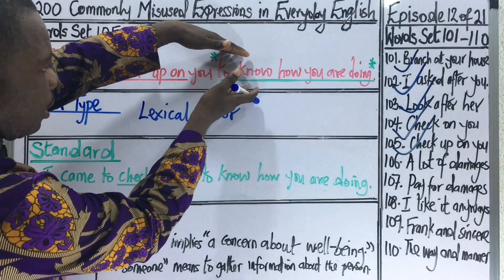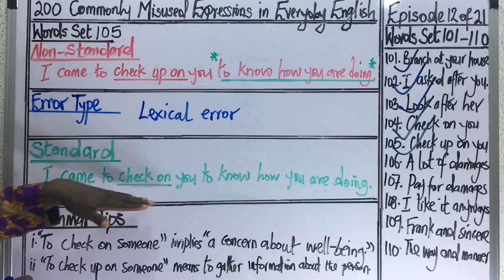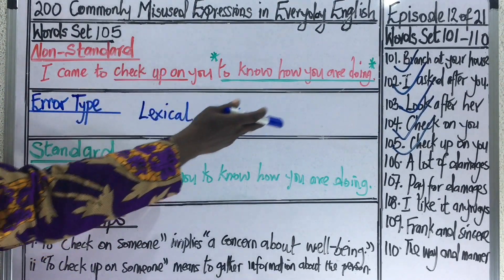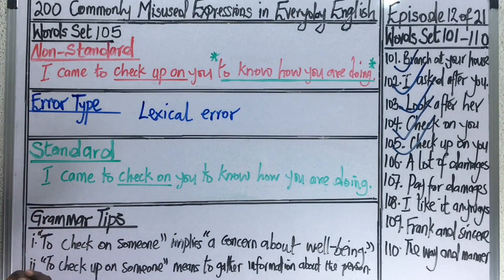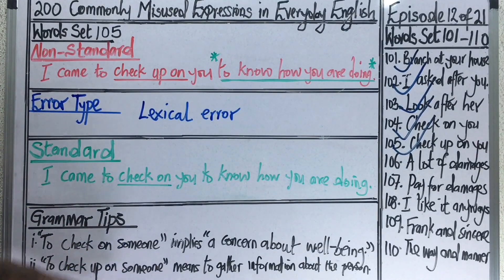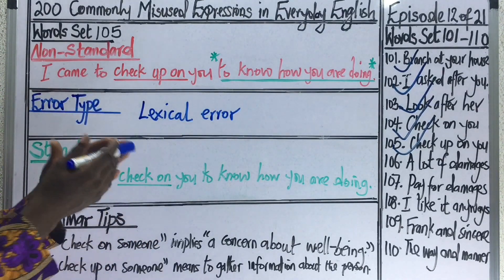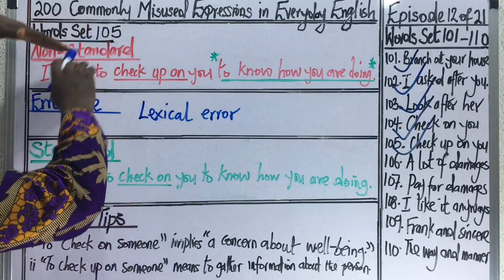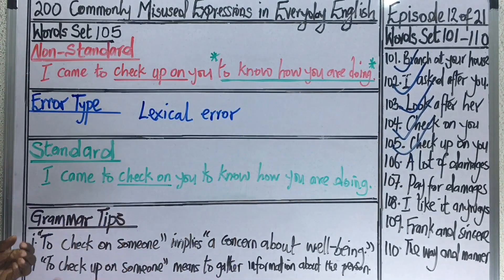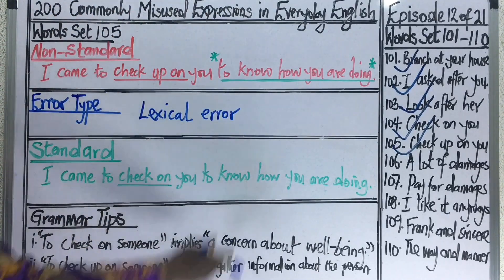The purpose of the visit here is to know how you are doing — about the person's well-being. So you should use 'check on' and not 'check up on.' When you visit someone to get specific information about them or about an incident, then you use 'check up on.' Instead of saying I came to check up on you to know how you are doing, you would say I came to check on you to know how you are doing.